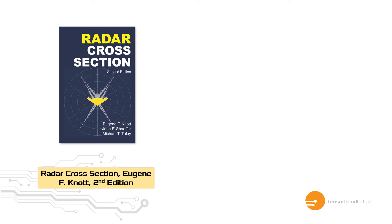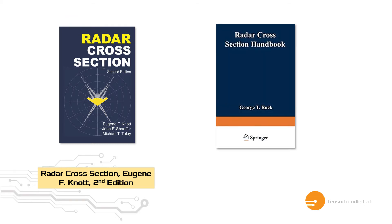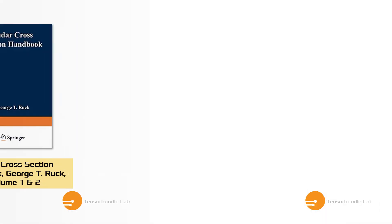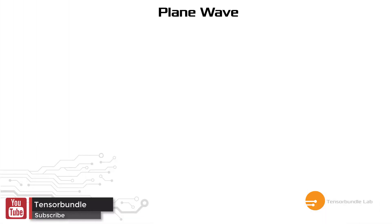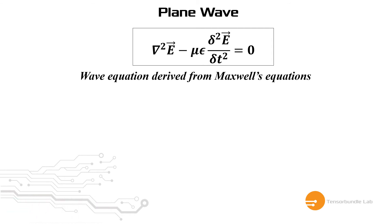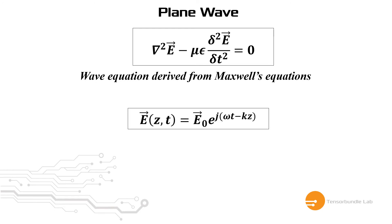I would like to recommend two good textbooks for radar cross-section. The first one is Radar Cross Section by E.G. Knott, and the second one is a classic textbook by George T. Ruck, which has two volumes. Give them a try — they are very good textbooks. Moving on to the topic of plane wave: this plane wave originates from the solution of the wave equation that can be derived from Maxwell's equations. The plane wave is one of many solutions of this wave equation.